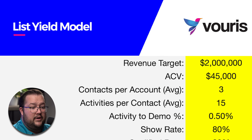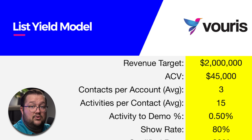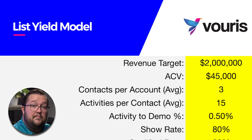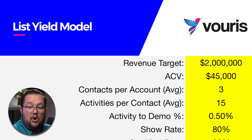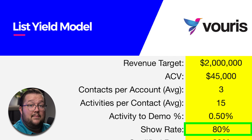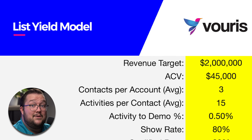The way you would figure this out is just look at how many activities your team has done and how many meetings they've booked, and divide the meetings booked by the activities done. If you don't know, the general rule of thumb is in the SMB space you'll see this closer to 1 or 2%, and as you move up market into the enterprise it'll get as low as 0.5%. Show rate: I would expect in this kind of market with larger deal sizes to have a high show rate of 80%. In the SMB space you sometimes see show rates as low as 60% or even 50%.